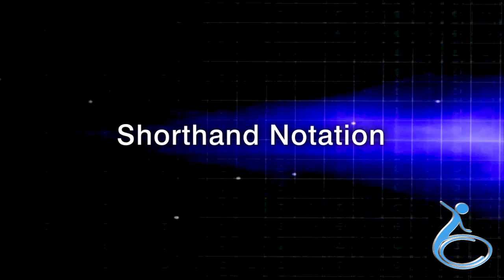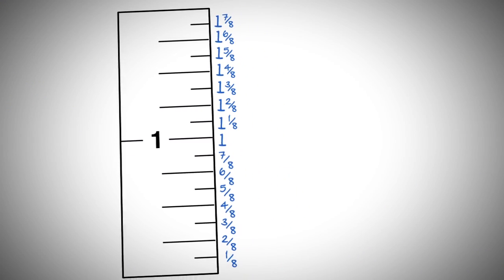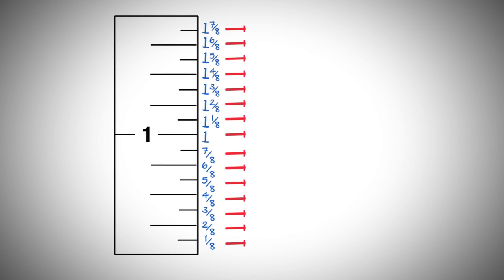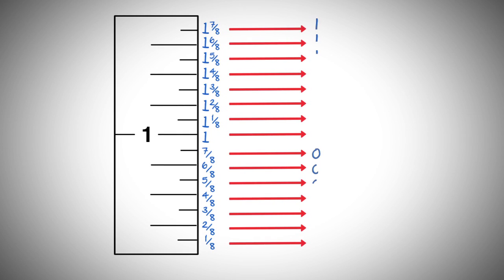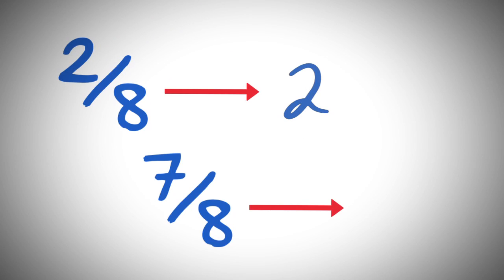Shorthand notation. This system is great for eliminating the job of writing out the fractions of an inch. Write the inch—zero, one, two, three, etc.—and then write the numerator of the fraction. Two for two-eighths, seven for seven-eighths.